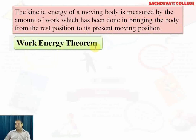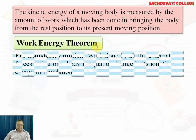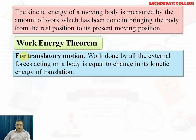For the work-energy theorem, the statement is: work = half mv² minus half mu², where u (or v₁) is the initial velocity and v (or v₂) is the final velocity. The work-energy theorem states that work done by all external forces acting on a body equals the change in its kinetic energy of translation.